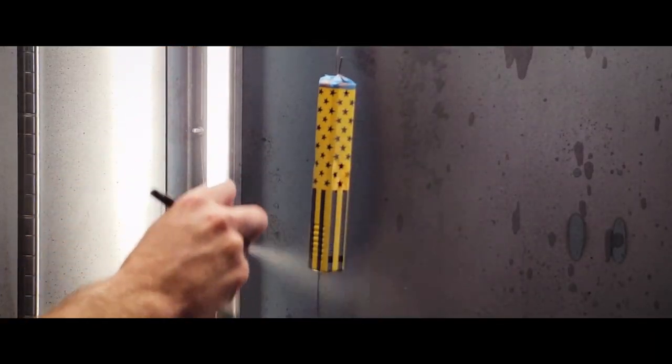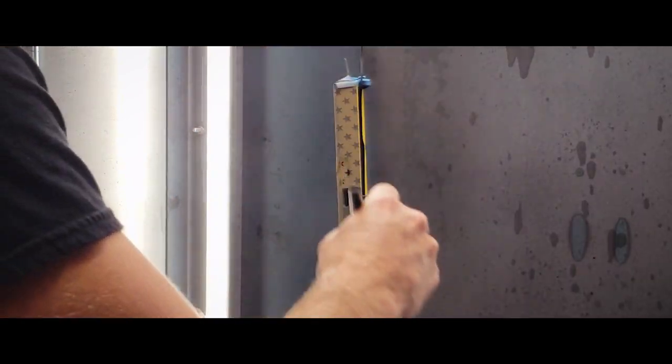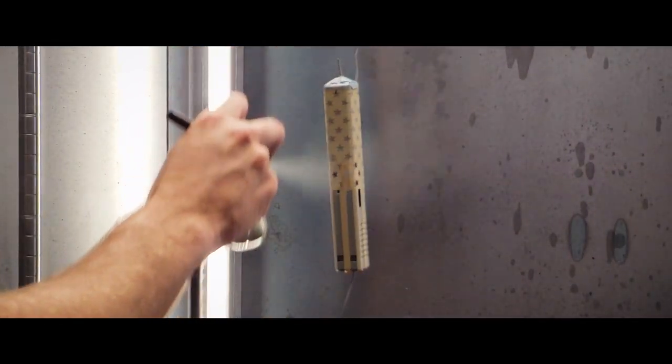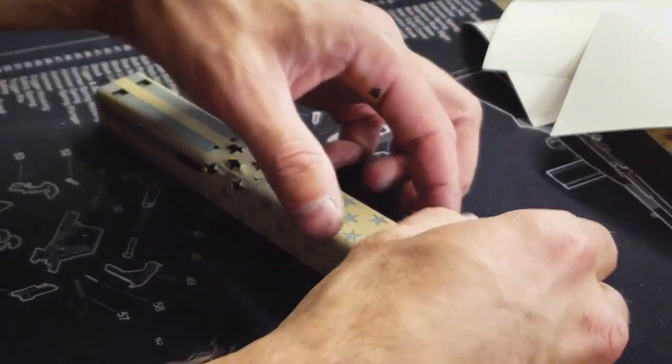With our stencil in place, we're going to apply our second color. Our second color is gray. We're spraying this light enough to cosmetically cover the base coat, but not so thick that it builds up edges along the stencil.